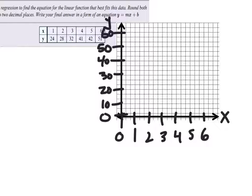I'm going to make smaller points on this one. So at 1, 24, maybe about right there. Missed that line. 2, 28. Close enough. 3, 32. 4, 41. 5, 42. And 6, 51. I think I got that.